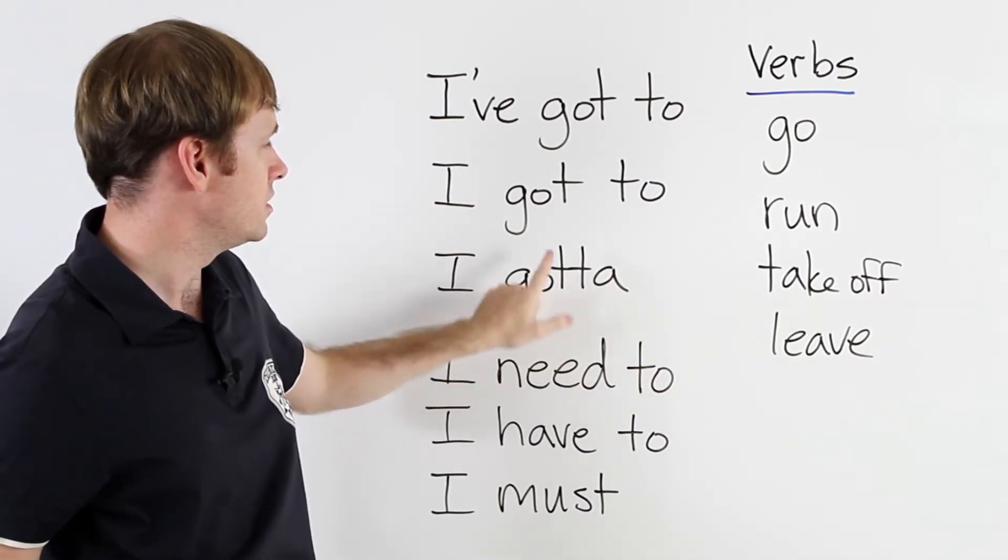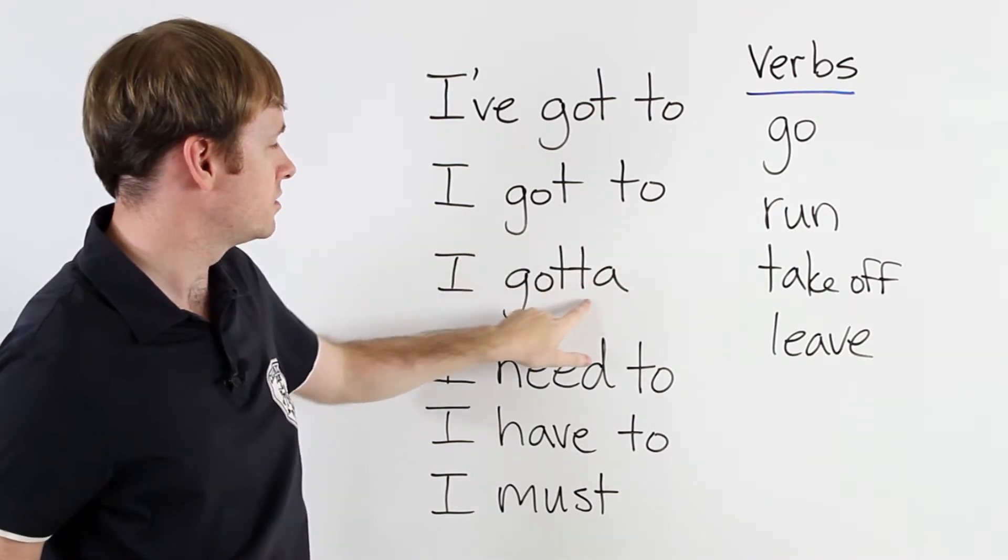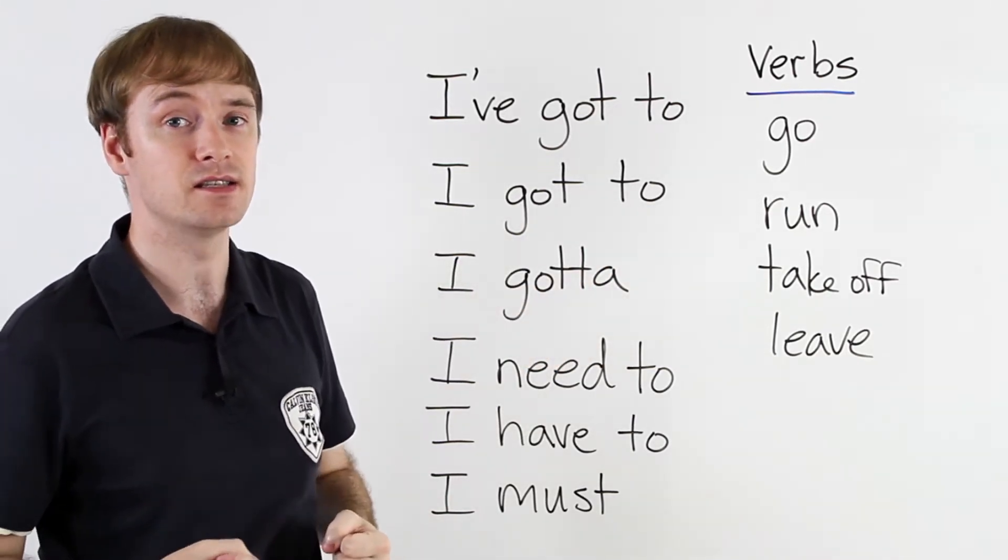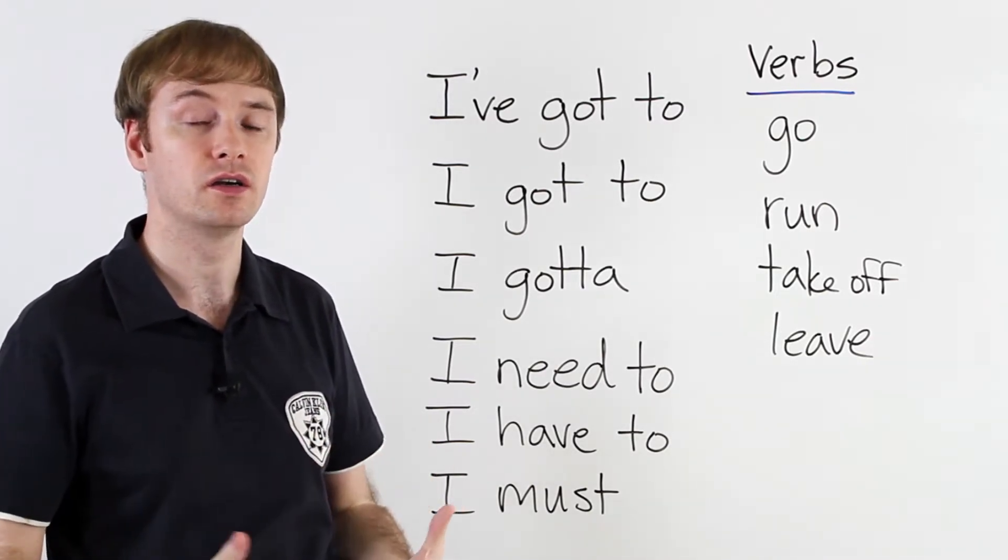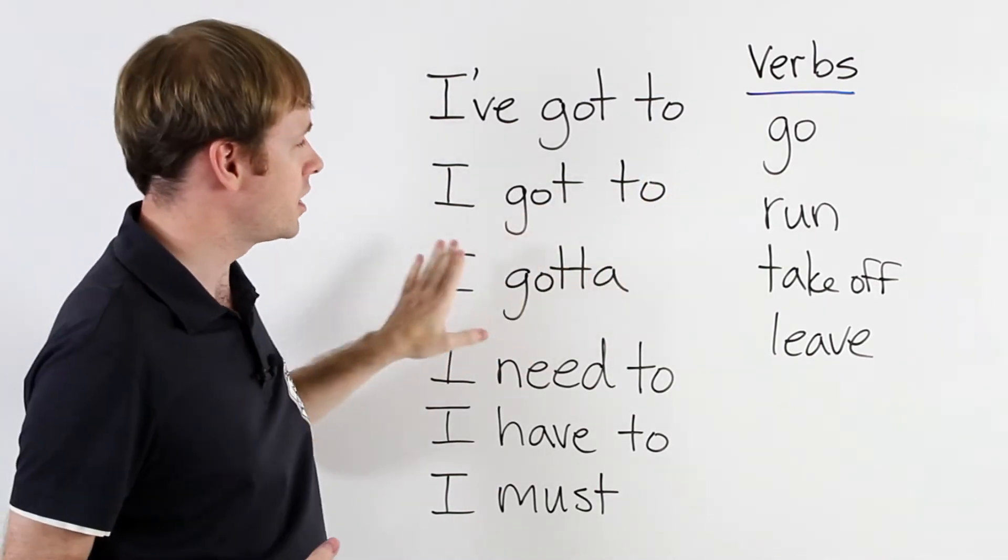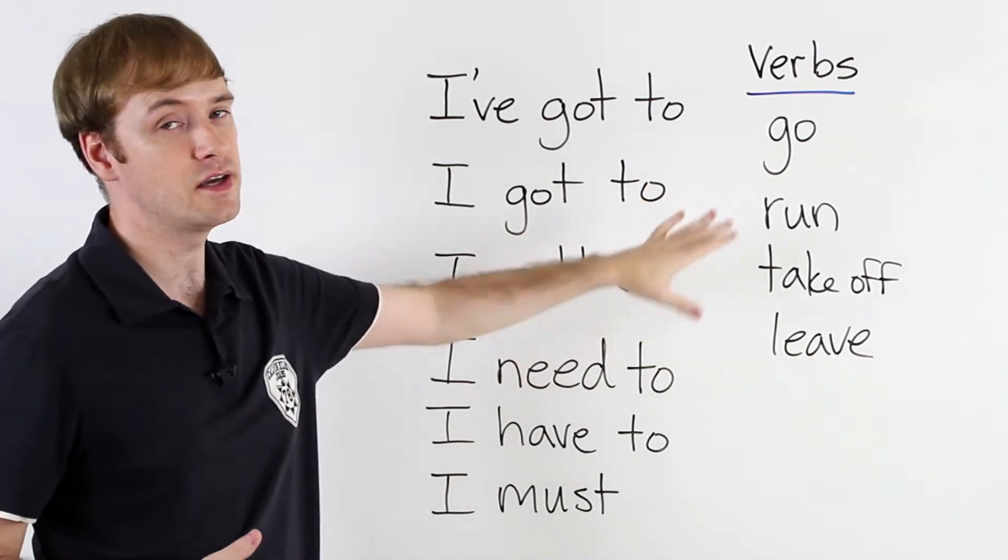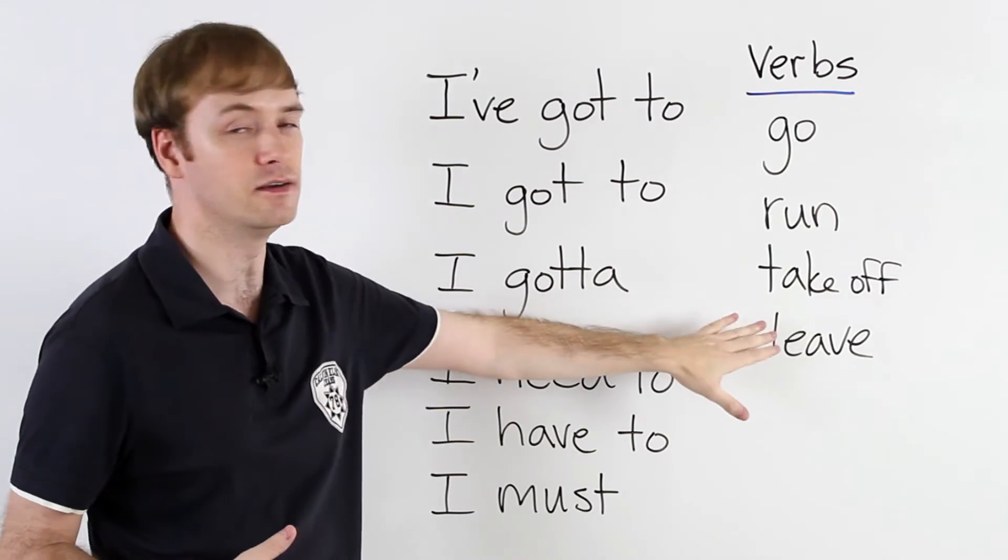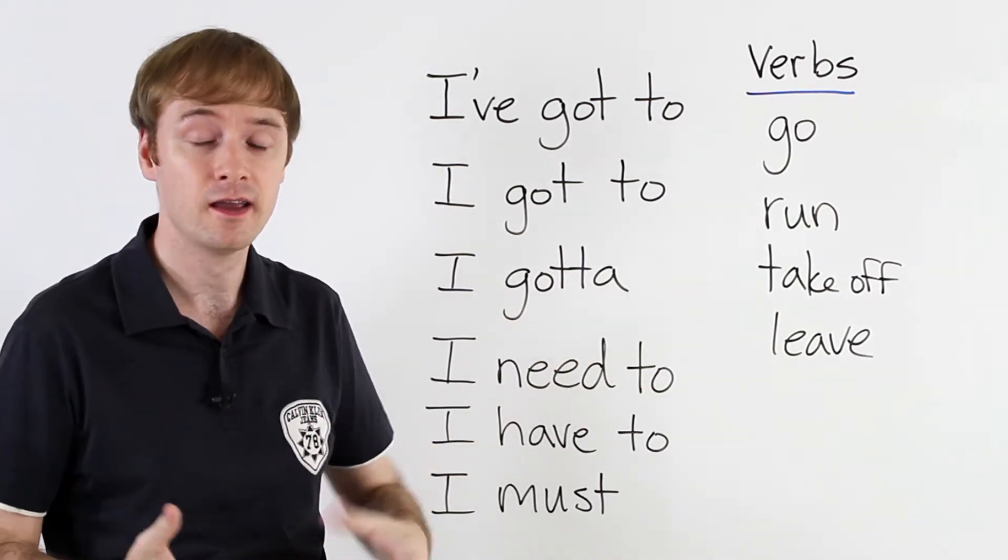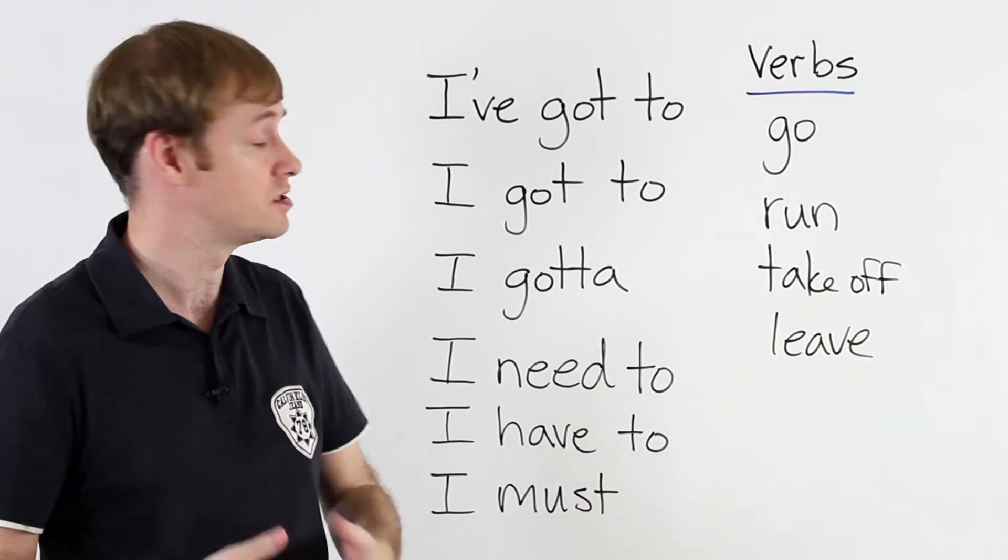The next one is, got to, but of course, when we say it very fast, it's going to sound like gotta. Gotta. Gotta. Gotta. Gotta. Got to. Gotta. I gotta go. I gotta run. I gotta take off. I gotta leave. So this one is probably the most common and the easiest one to use. I gotta. Gotta.